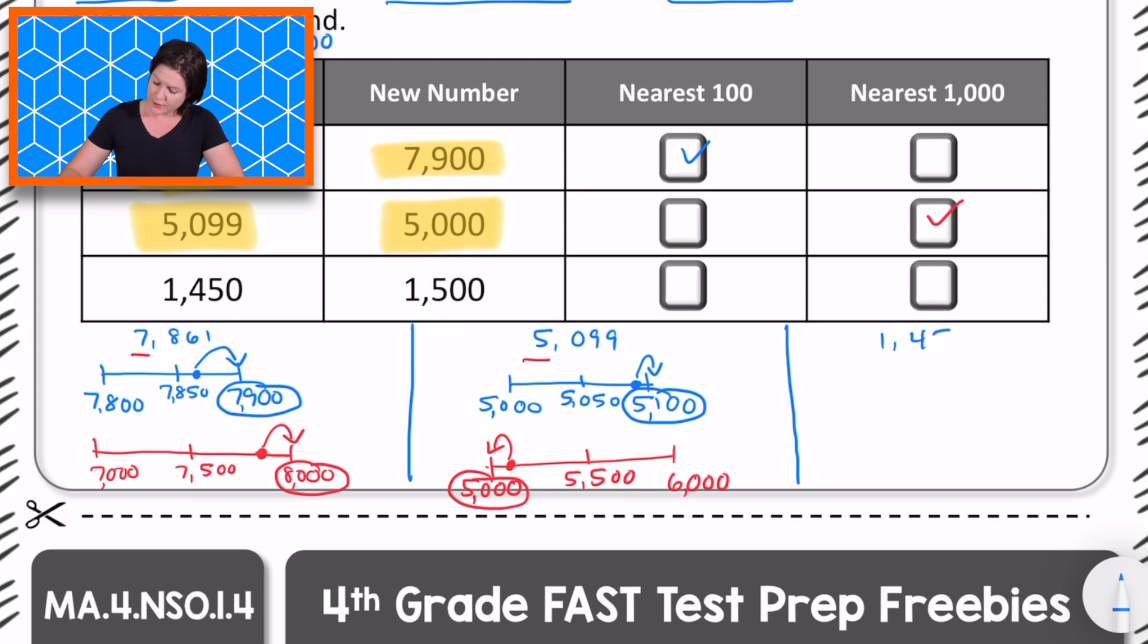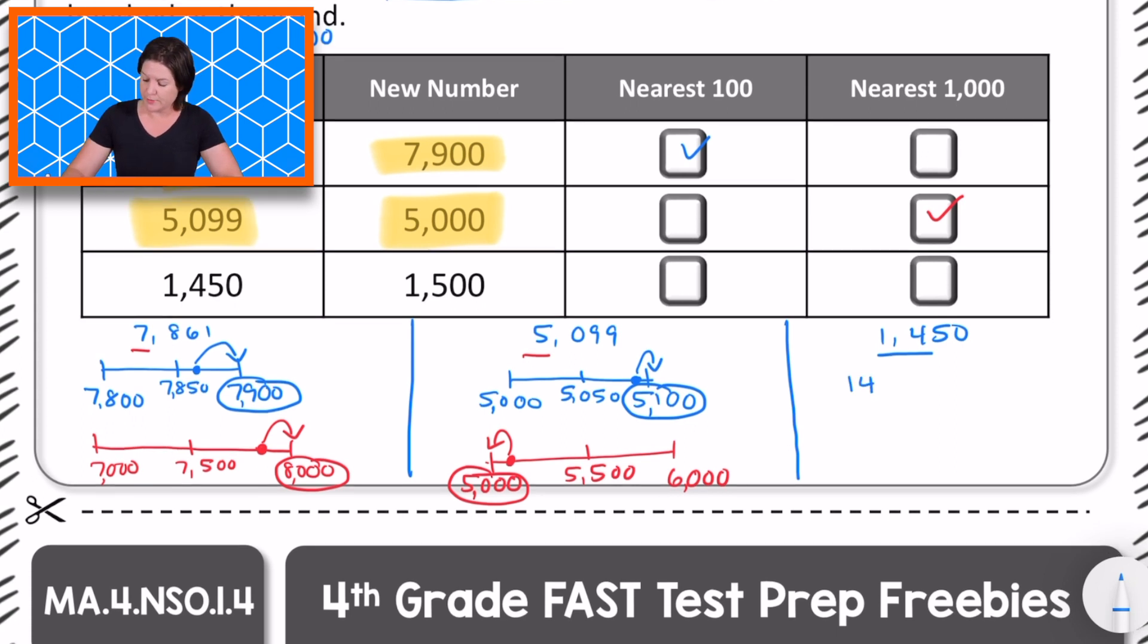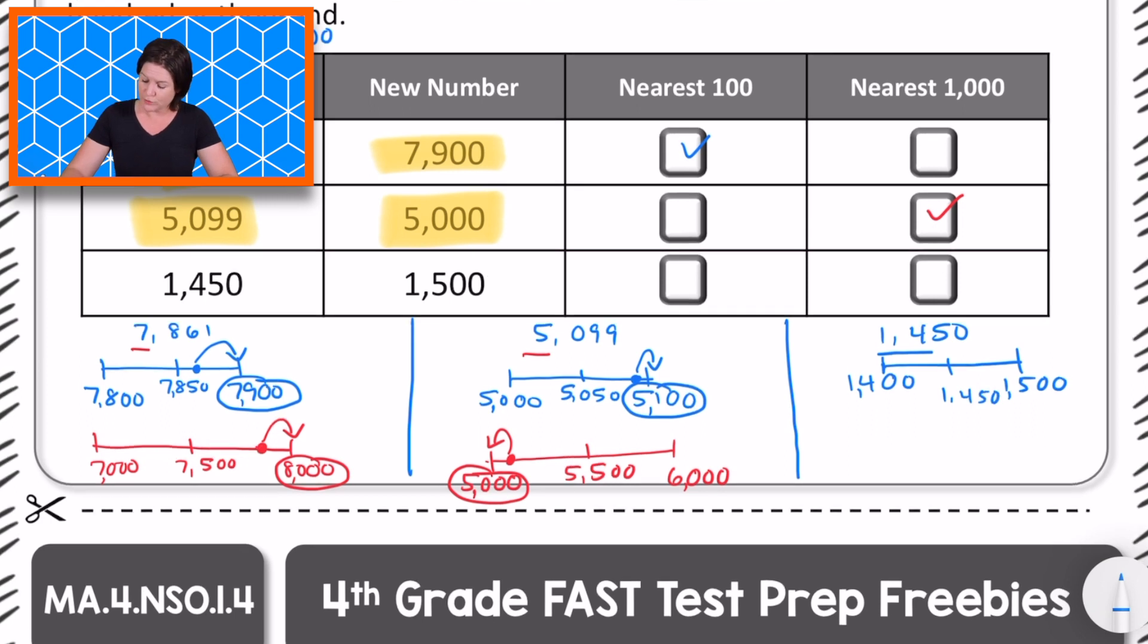Last one, we've got 1,450 rounding to the nearest hundred. We've got 1,400 in this number. So it's going to be between 1,400 and 1,500 in the middle would be 1,450. Oh my goodness. That is right. The exact number that we need because it's exactly halfway. We actually need to round it up to 1,500. So it looks like it is rounded to the nearest hundred in this case.